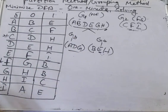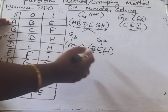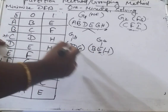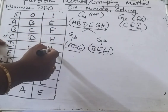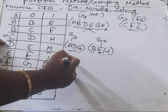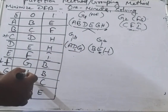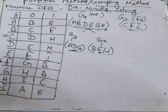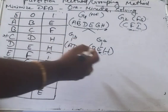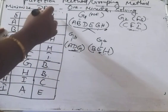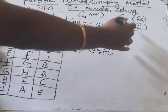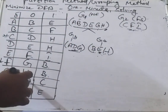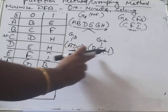Now check whether we can partition G3, which is {A, D, G}. A on 0 goes to B and on 1 goes to E — both in G4. D on 0 goes to E and on 1 goes to H — also both in G4. G on 0 goes to H and on 1 goes to B — again both in G4. So we cannot partition G3 further. Similarly for G4 {B, E, H}: B goes to C and F, E goes to F and I, H goes to I and C — all go to the same final state group. We cannot partition G4 further either.